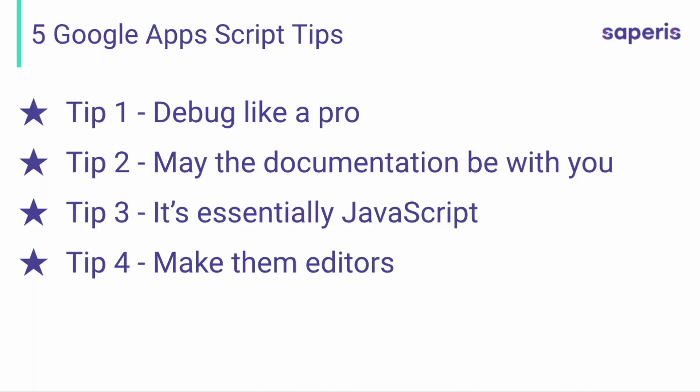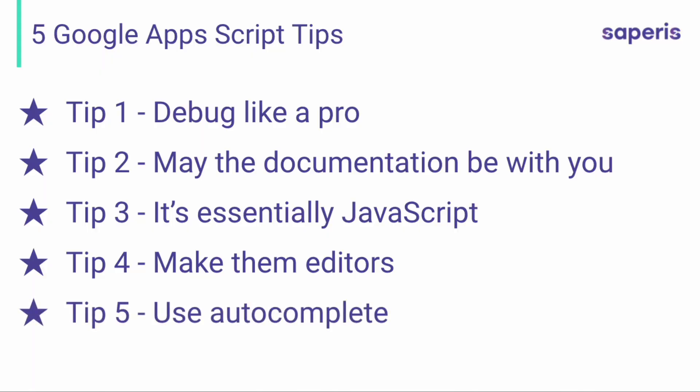Tip number five: use autocomplete. With the new Apps Script IDE, we have an awesome autocomplete functionality — this is something we were missing in the previous version, but now it works really well. I use it every single time I code in Apps Script. I suggest using it because it will guide you when you're writing your code, so you will be faster.